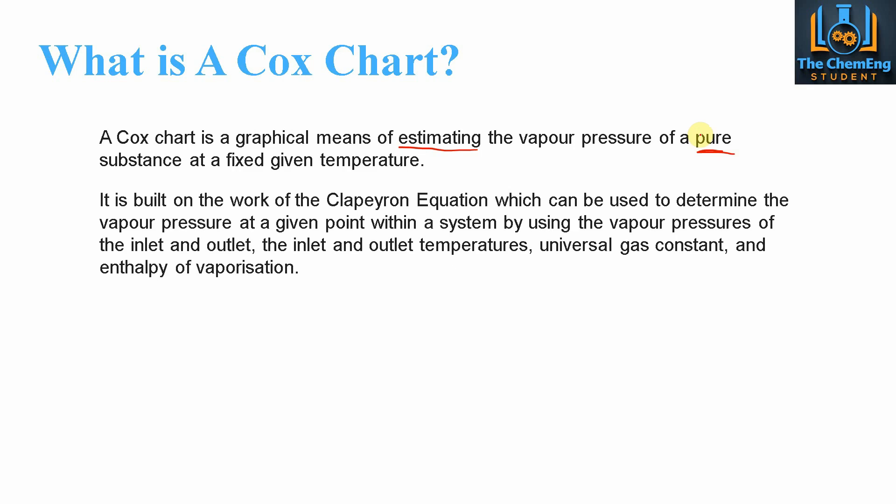The Cox chart built on the work of the Clapeyron equation. For those familiar with the Clapeyron equation — we cover it in a few of our different chemical engineering courses and I'll put a link in the description. The Clausius-Clapeyron equation is very useful for determining vapour pressures at different points within a system. It allows us to determine either the inlet or the outlet vapour pressures or temperatures, because all we need are the vapour pressures and temperatures at the inlet and outlet, the universal gas constant, and the enthalpy of vaporization.